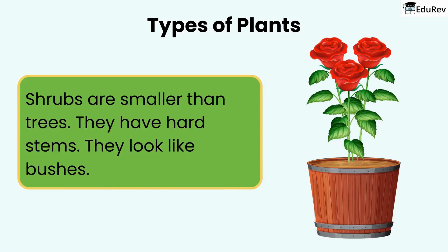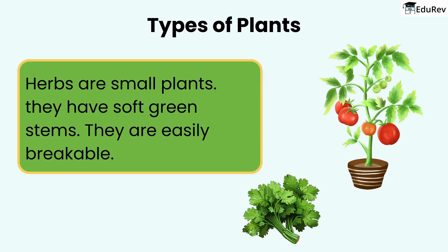Shrubs are smaller than trees. They have hard stems and they look like bushes. Examples of shrubs are roses and cotton plants. Herbs are small plants with soft green stems. They are easily breakable. Examples of herbs are tomato plants and coriander.